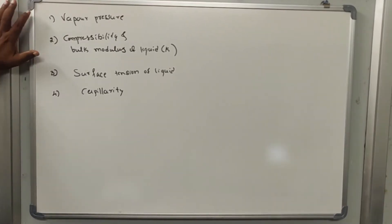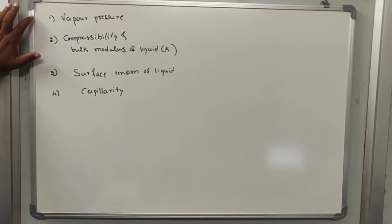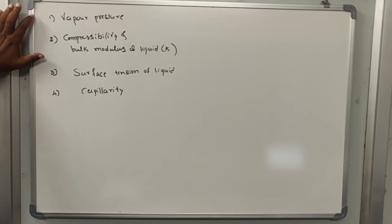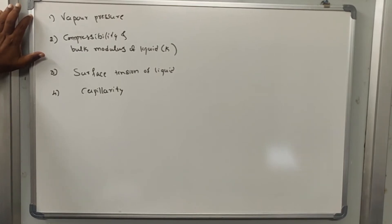What is vapour pressure? Vapour pressure is that pressure at which the liquid changes from liquid state to gaseous state. This happens because of the continuous escape of molecules — the liquid changes from the liquid state to the gaseous state.